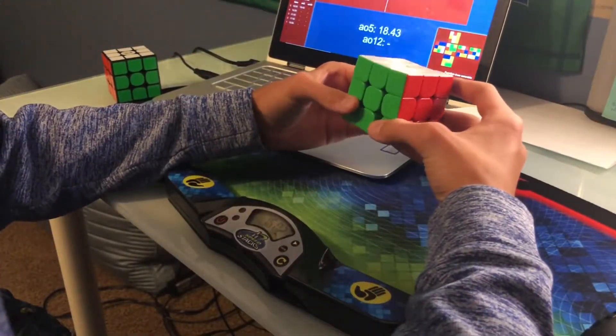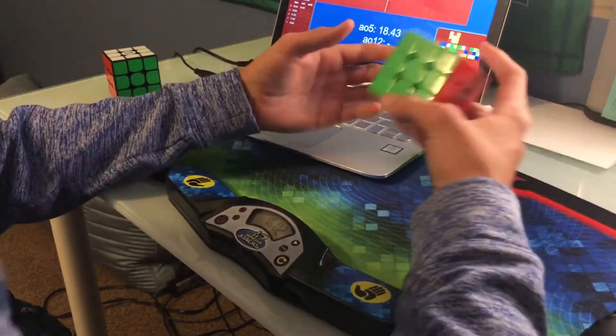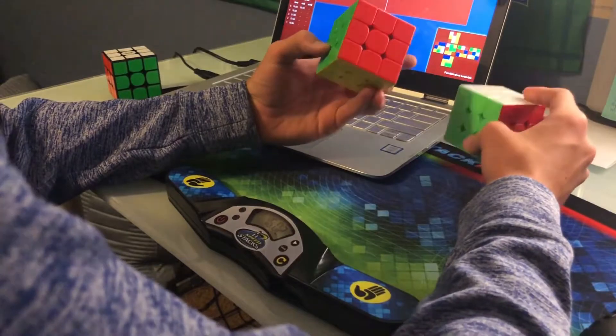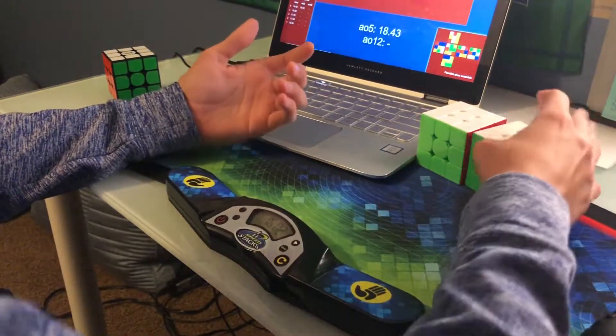So surprising results there, the YJ Yulong V2-M, which is significantly cheaper than the Weilong GTS-3M, actually achieved a better average of 18.43 seconds.